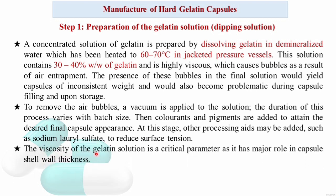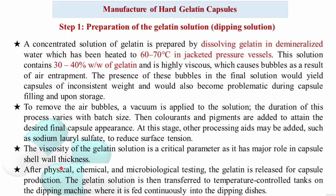The viscosity of the gelatin solution is a critical parameter as it has a major role in capsule shell wall thickness. After physical, chemical, and microbiological testing, the gelatin is released for capsule production. The gelatin solution is then transferred to temperature-controlled tanks on the dipping machine, from which it is continuously fed into dipping dishes where pegs or pins are dipped to form a gelatin coating.